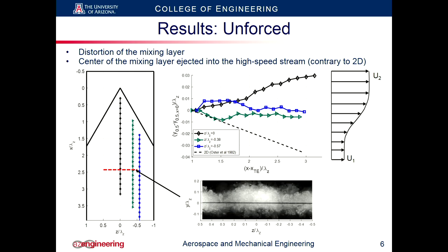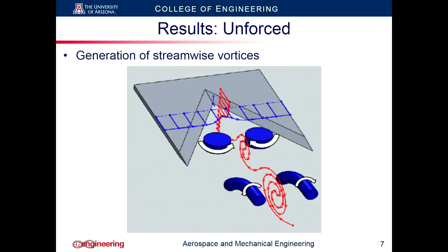When we put a lambda notch in, we actually see the opposite effect. The center of the mixing layer is inclined towards the high speed stream, while more outboard locations are inclined more downwards. This was confirmed with flow visualization images: injecting smoke at the splitter plate shows a slight upward bending in the center and downward bending at the outboard locations.